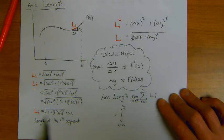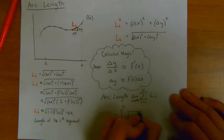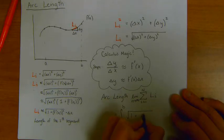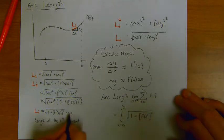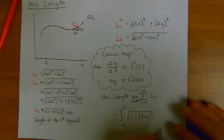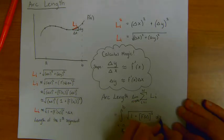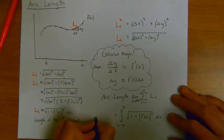This sum becomes the integral. And L sub i, we have a formula for what L sub i is. It's going to be the square root of 1 plus f prime of x squared. And this delta x, when I take the limit, becomes dx. So this is my arc length.